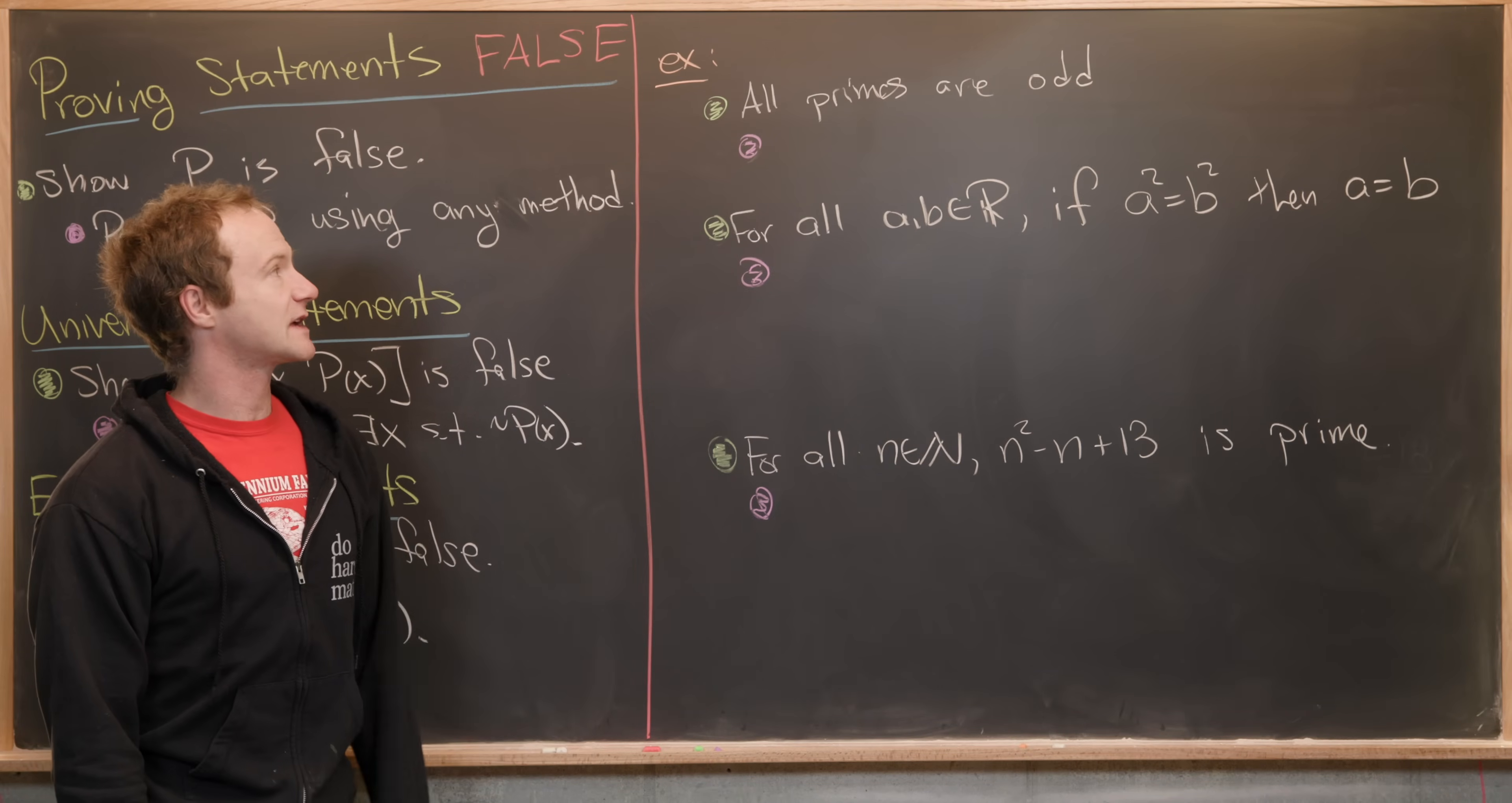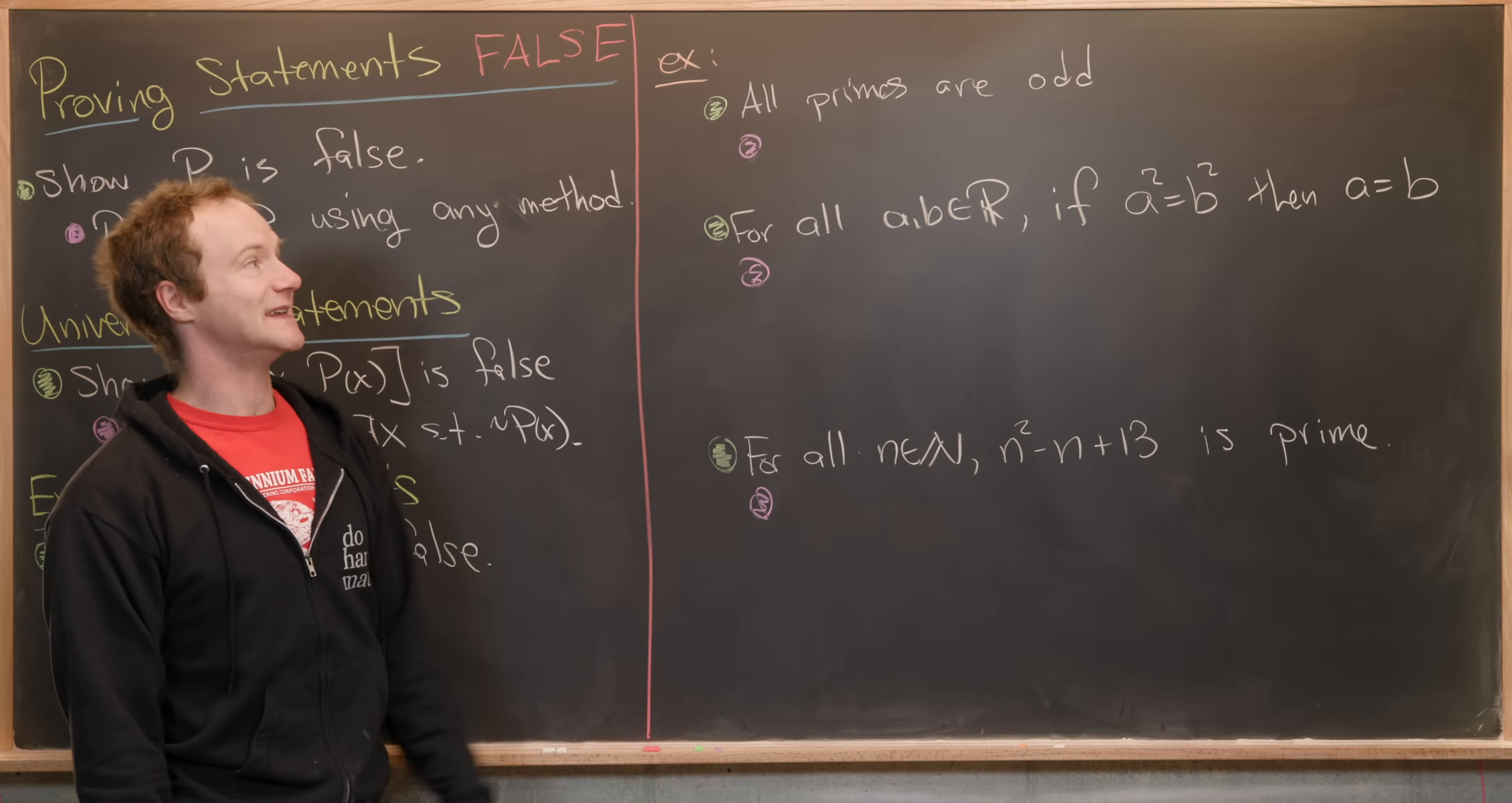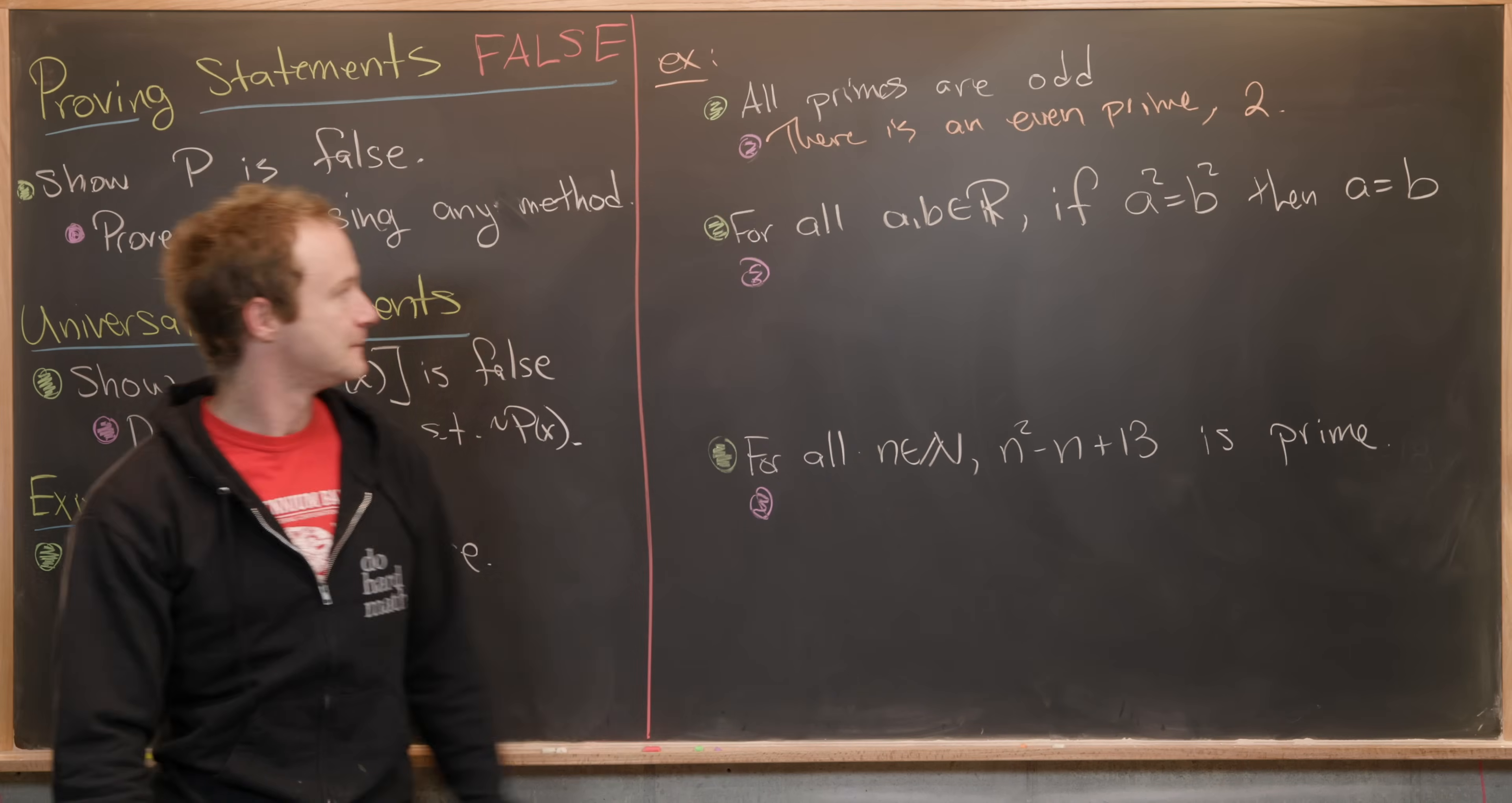The first example I want to look at is all primes are odd. In other words, for all prime numbers P, P is odd. Clearly this is false because we know about an even prime. It's the number two. The negation of this statement would be there is an even prime. What is that even prime? It's the number two. In other words, there exists a prime two, which is even.